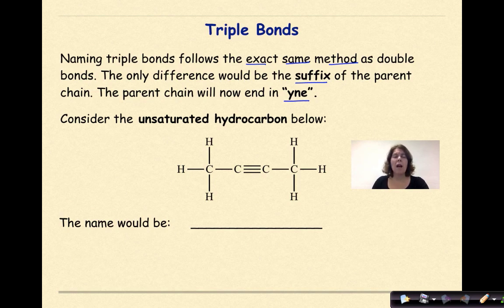So I'm going to start over on the left and I'm going to call this carbon 1-2-3-4 which means my prefix is going to be but. It's a triple bond so my ending is going to be Y-N-E and the triple bond falls between the second and the third carbon. So this is going to be 2-butyne.